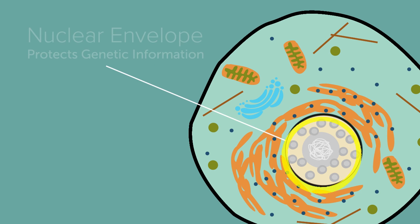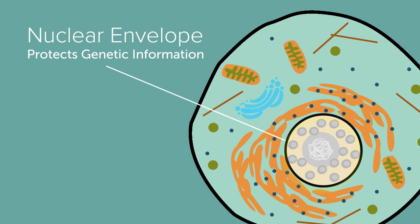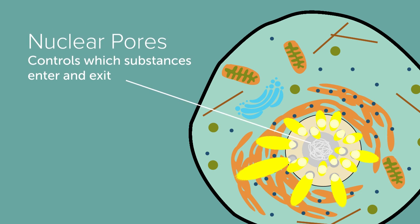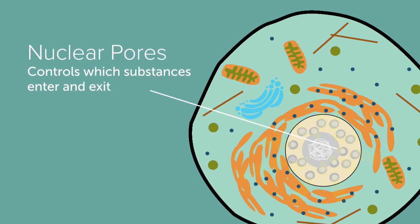The nucleus is contained by a double membrane called the nuclear envelope, which works to protect the DNA by controlling what types of molecules can enter or exit. The nuclear envelope uses pores that allow certain substances to enter and leave.